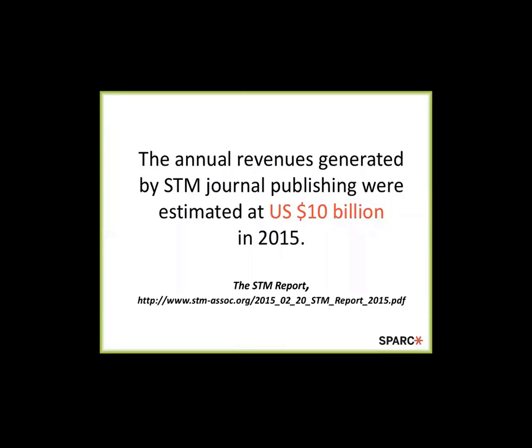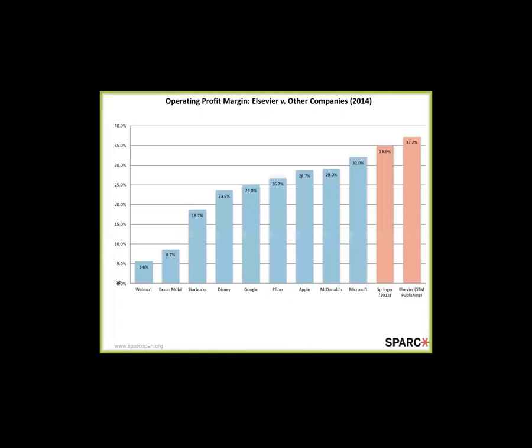Cumulatively, journal publishing — where you contribute articles for which you're not paid — is generating enormous revenue for publishers. It's roughly a $10 billion a year revenue-producing industry. To put that in perspective, that's roughly the same amount of revenue as the National Football League made last year. So it is big business, and it's a huge profit-making business.